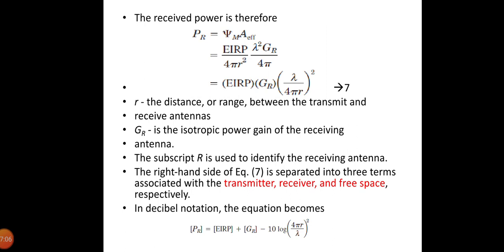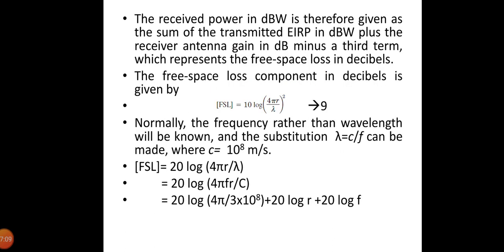The free space loss component in dB is given by FSL equals 10 log(4πr/λ)². Normally the frequency rather than wavelength will be known, and the substitution λ equals c/f can be made, where c equals 3×10⁸ meters per second. With the frequency in megahertz and distance in kilometers, the free space loss is given by FSL equals 32.4 plus 20 log r plus 20 log f.